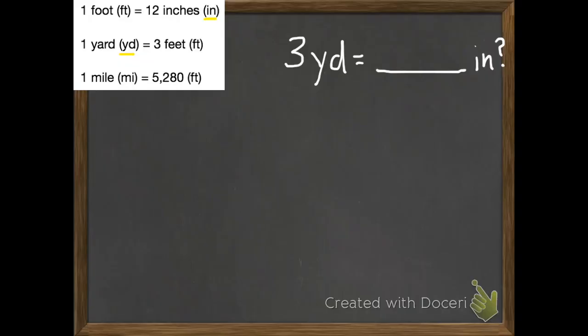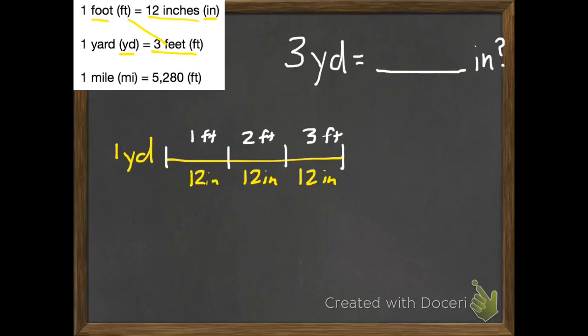Let's start with our yards. If we have one yard, and I break that into three feet, then I can take each of those feet and turn them into inches. Each foot has 12 inches. If we add up all of our inches, we have 12 plus 12 plus 12, or 12 times 3. That's going to equal 36 inches.